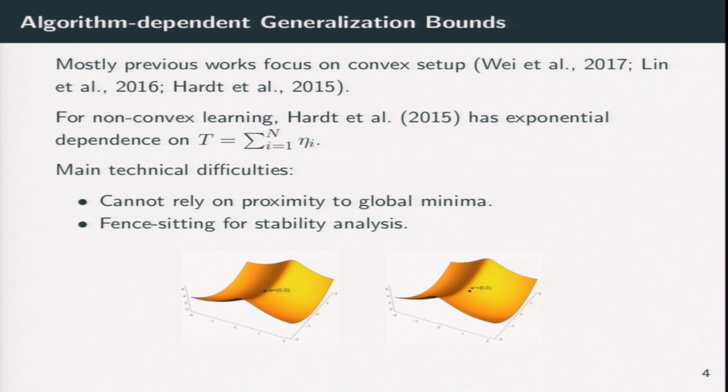The key technical difficulty when you deal with non-convex loss is that you cannot rely on that your algorithm converges to some global optima or converges to some stationary distribution because it takes too long time. And the second thing is this funny picture about the stability analysis. If your current iteration sits here around this saddle point, and if your loss surface moves a bit by change of one data point,